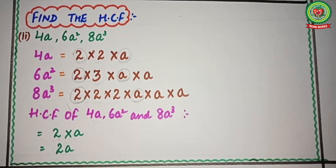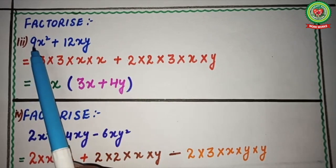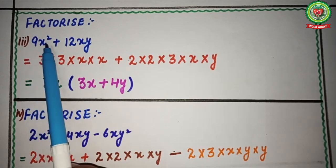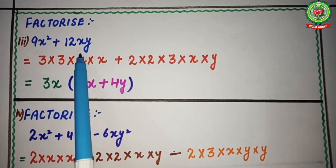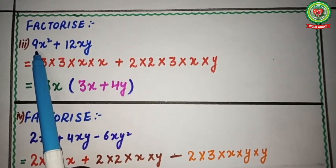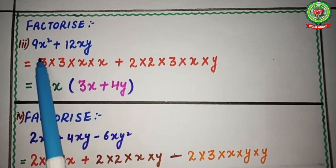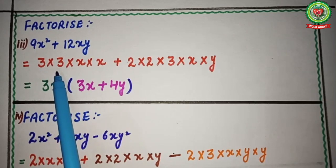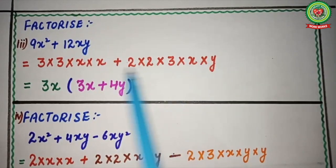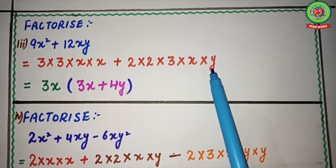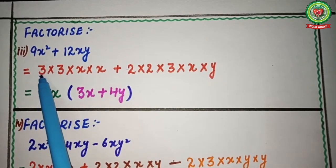Now move to the next question: factorize. We have to factorize the expression 9x² + 12xy, which has two terms. To factorize, we first find the factors of all terms. Factors of 9x²: 3 × 3 × x × x. Factors of 12xy: 2 × 2 × 3 × x × y. We then choose the common factors from both. We can see that 3 is present in both, so we circle it.